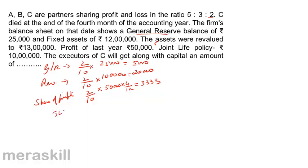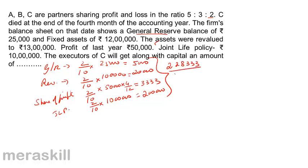Next, there is a joint life policy of 10 lakh. C's share is 2/10 of 10 lakh, which equals 2 lakhs. Therefore, along with capital, the executors of C will receive a total amount of 2,28,333 plus capital. To summarize: the deceased partner's executors receive the capital, share of general reserve, share of revaluation profit, share of profit up to the date of death in the current year, and the share in the maturity value of the joint life policy.